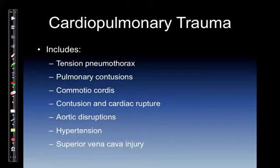Myocardial rupture has a high mortality rate and the patient may be in cardiac arrest on scene. Aortic disruptions are often fatal; most patients bleed out at the scene. Hypertension occurs as the body's attempt to compensate for decreased blood flow to the majority of the body. Superior vena cava injuries are often fatal as well — even though they are under low pressure, they carry a large volume of blood and it is hard to get ahead of that.